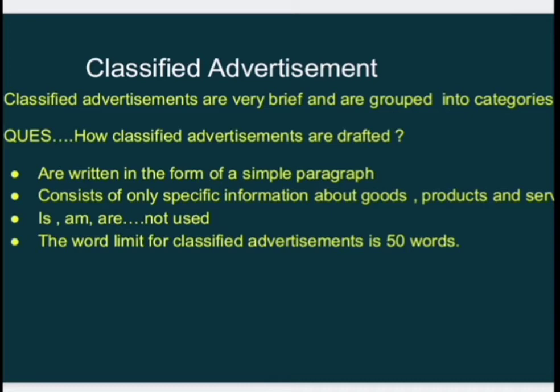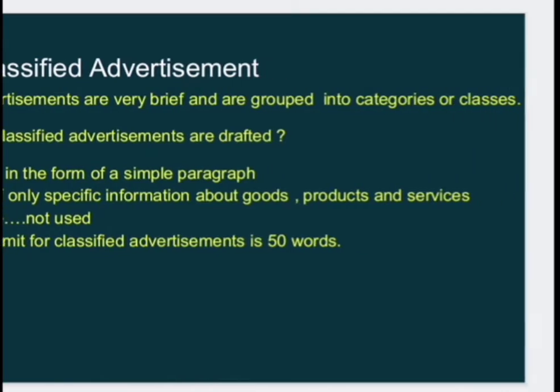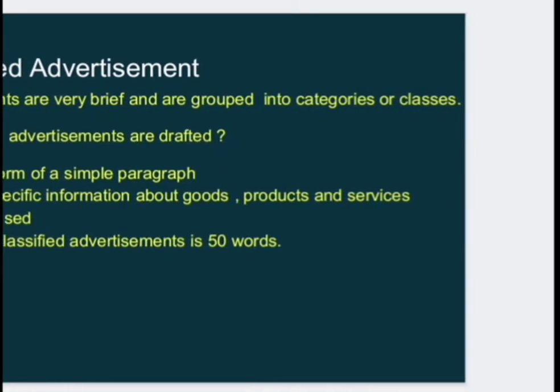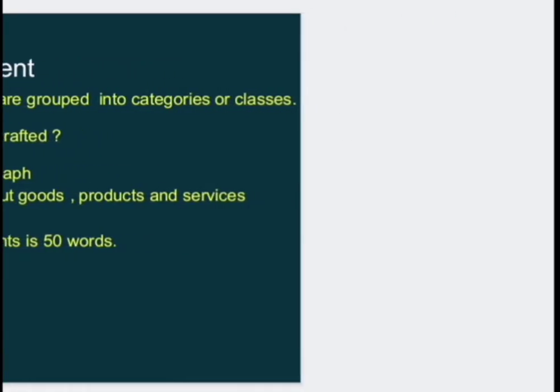How are classified advertisements drafted? They are written in the form of a simple paragraph, consisting of only specific information about the goods, products, and services. We do not use helping verbs — is, am, are. The word limit for classified advertisements is just 50 words.